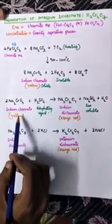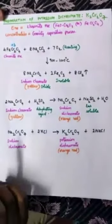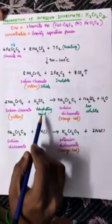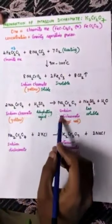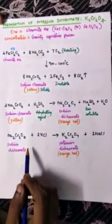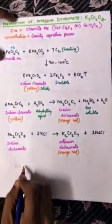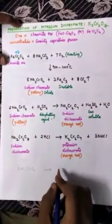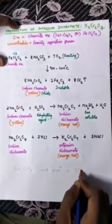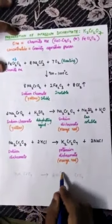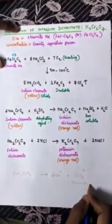In the second step, the sodium chromate solution is treated with sulfuric acid. Sulfuric acid acts as a dehydrating agent — it removes water molecules. As a result, sodium chromate gets converted into sodium dichromate. The chromate ion CrO4²⁻ is converted into the dichromate ion Cr2O7²⁻.